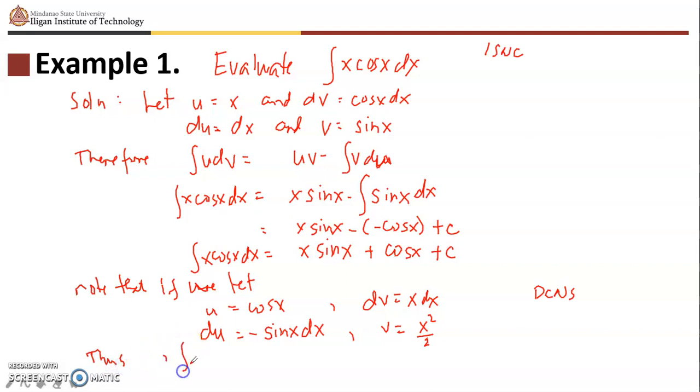We will have the integral of x cos(x) dx becomes u times v, which is (x²/2) cos(x) plus the integral of v du. Our v is x²/2 and our du is negative sine x dx, so we'll have (x²/2) cos(x) plus one-half integral of x² sin(x) dx. So the integral this time on the right is more complicated than the one we started with.